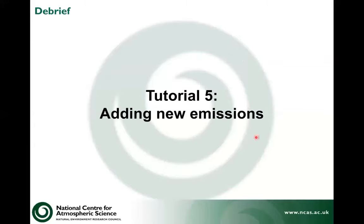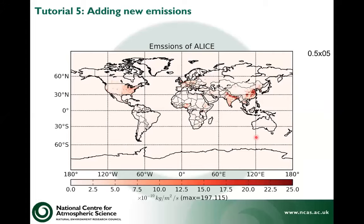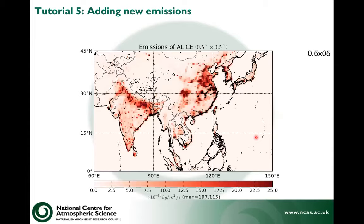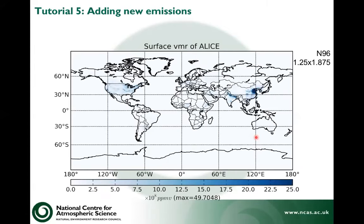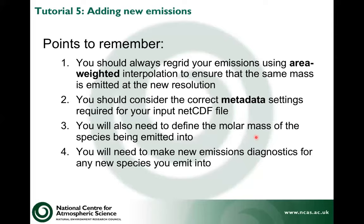Once you finish the adding new emissions tutorial, we start with emissions of ALICE at half a degree by half a degree resolution. We re-grid it to another resolution — this example is for N96, yours would look even coarser. We can see that the half a degree by half a degree is quite fine, but at N96 it's very blocky, and even worse at N48. Once you've added it in, you'll start seeing stuff appearing within the ALICE tracer. Remember: always re-grid emissions using area-weighted interpolation to ensure the same mass is emitted at the new resolution. You should always consider the correct metadata settings required for your NetCDF file, define the molar mass and species you're emitting into, and make a new emissions diagnostic for your new species.